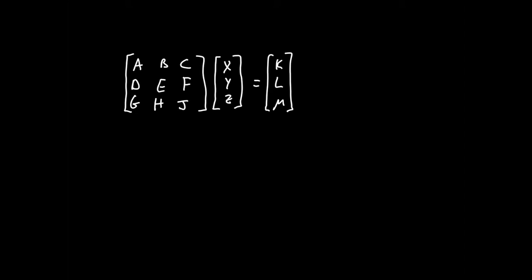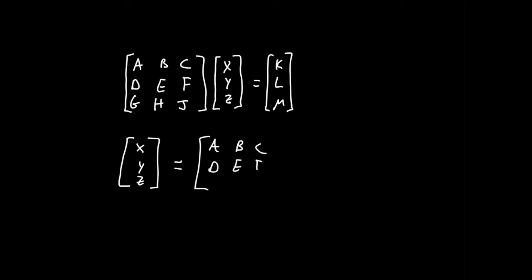The operation we're going to do to get x, y, and z is: take the coefficient matrix — a, b, c, d, e, f, g, h, j — raise it to the negative one power (take its inverse), and then multiply it by our constant term matrix. That generates a matrix with three entries: the top one is x, the next is y, and the bottom is z. How exactly that works mechanically, the calculator takes care of — it's interesting to learn about and I'd encourage you to seek other resources, but that's outside what we have time for in a physics class.